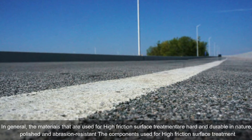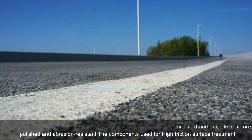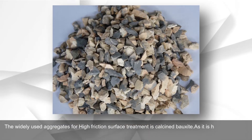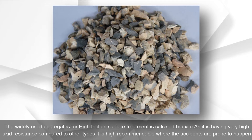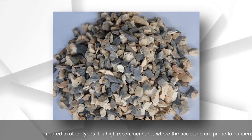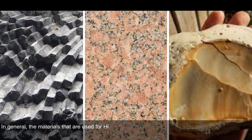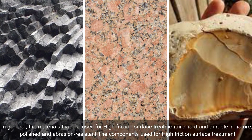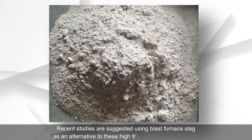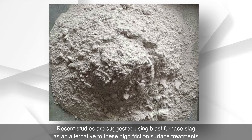High friction surface treatment materials are generally hard, durable, polished, and abrasion resistant. The widely used aggregate for high friction surface treatment is calcined bauxite, as it has very high skid resistance compared to other types and is highly recommendable where accidents are prone to happen. Other aggregates like basalt, granite, and flint can also be used for preventive maintenance where there is a low risk of accidents.